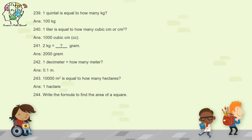Question 244: write the formula to find the area of a square. The area of a square equals side times side, and you write square units because we are calculating area.